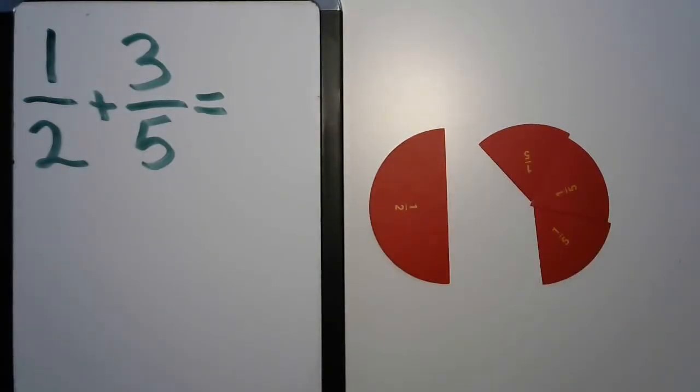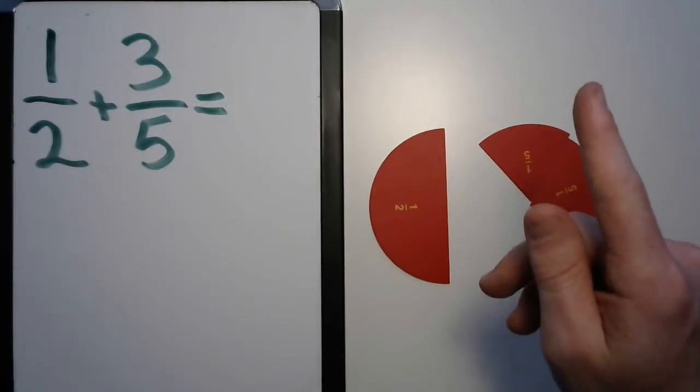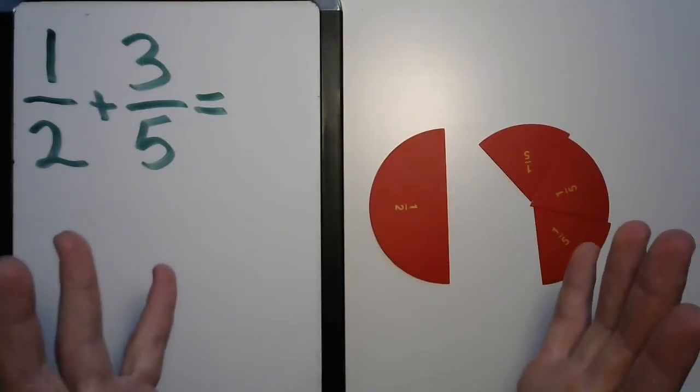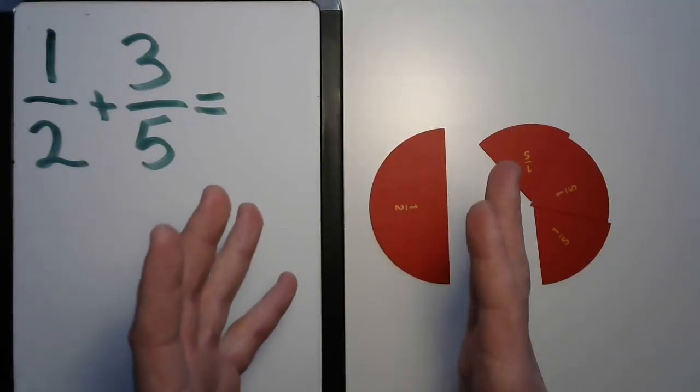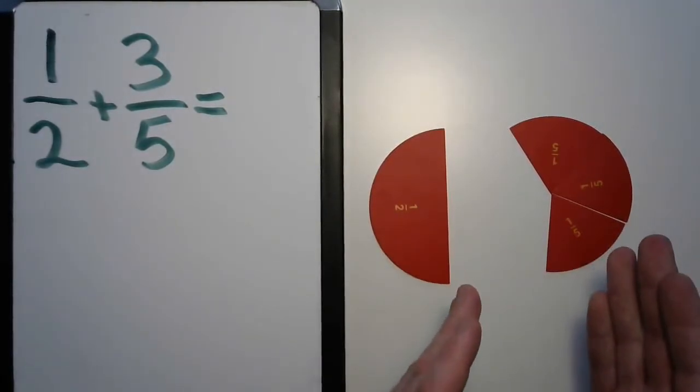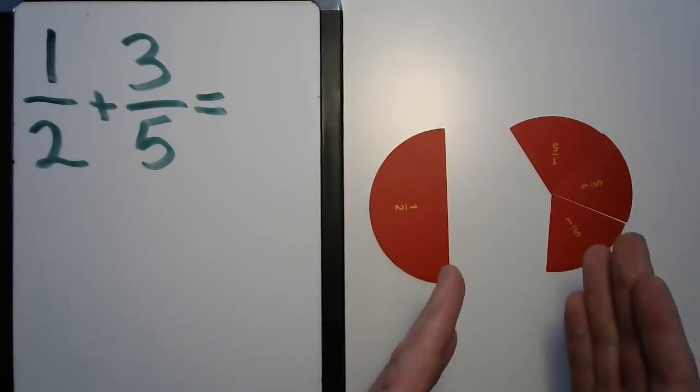Let's try fives. Five, ten, fifteen. Wait a second. We heard something in both of those, right? Ah, ten. Ten's a common multiple. So, can we change both of these into tenths? Would that make it easier? And how would that look?